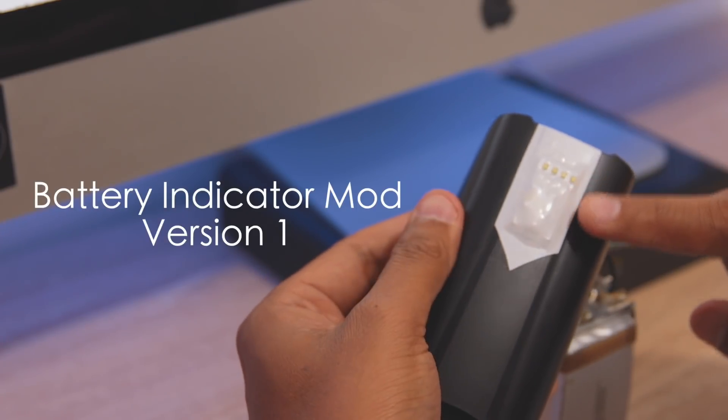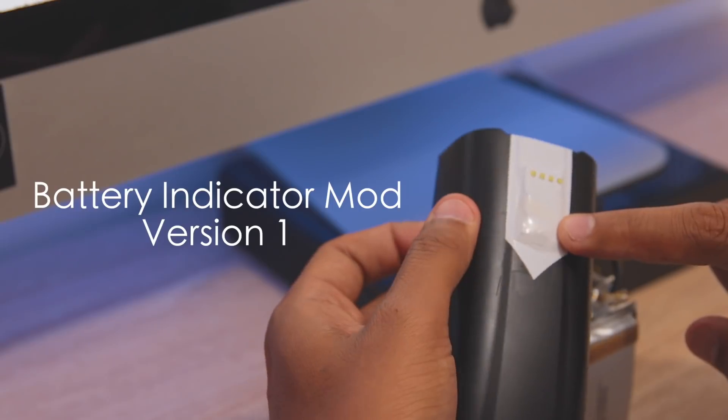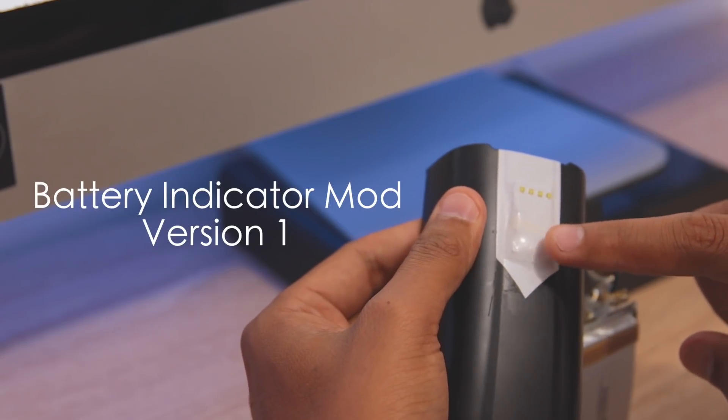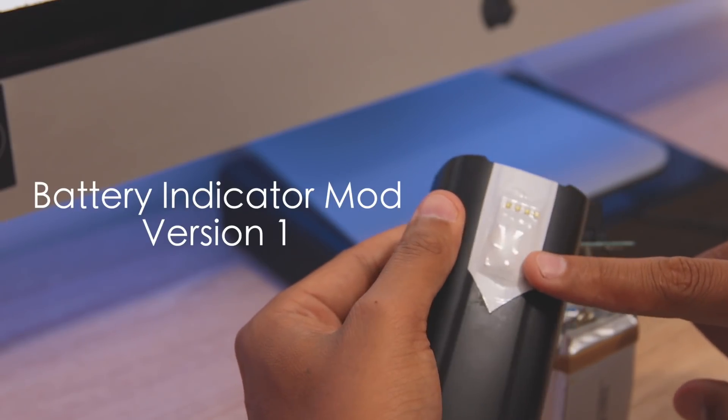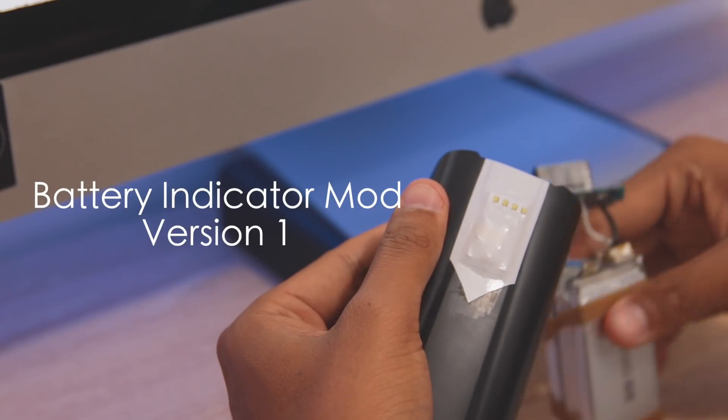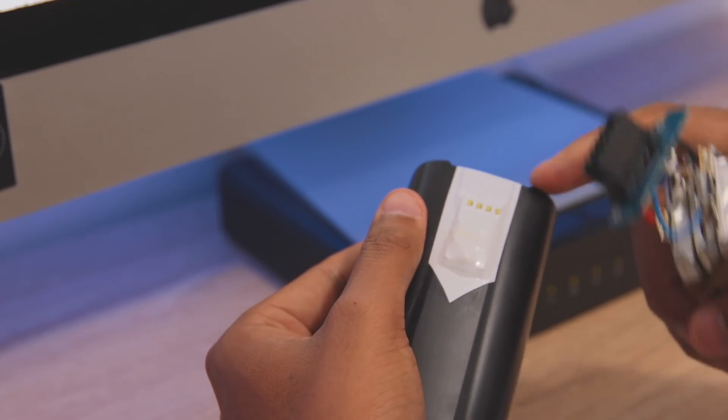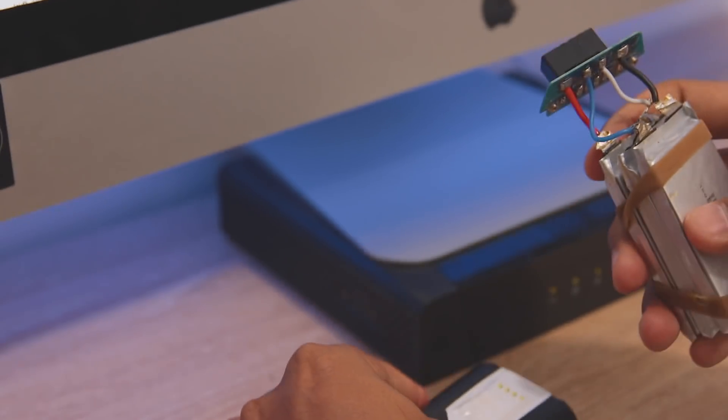So this is the first mock-up with this flat SMD mounted indicator, and what it does is it senses the voltage across all the batteries. This does not check each cell individually.